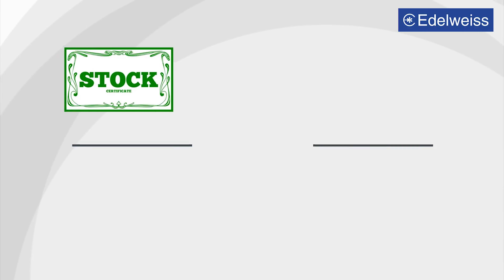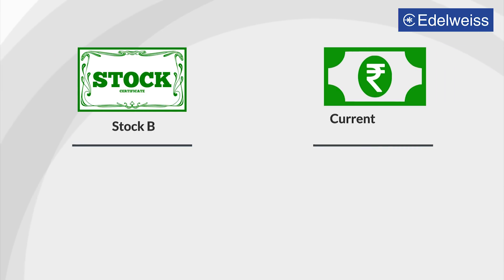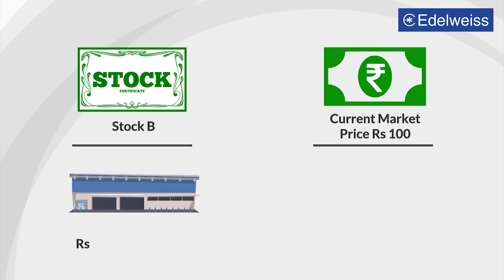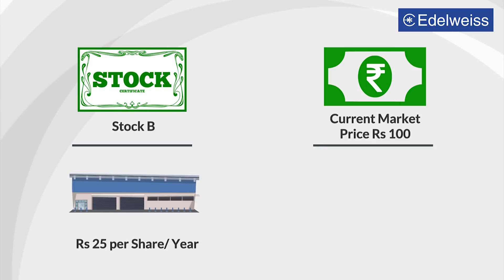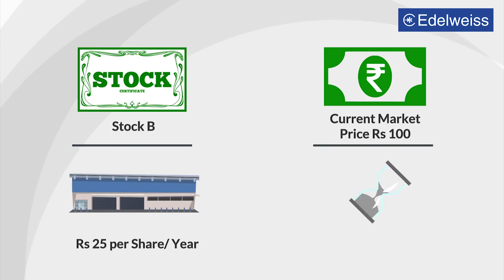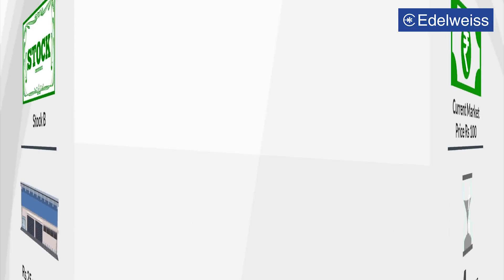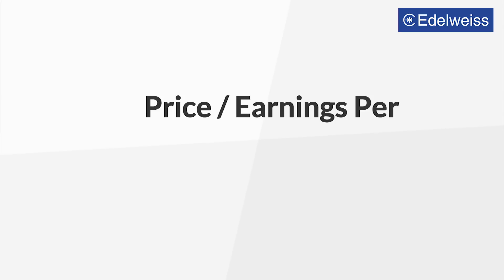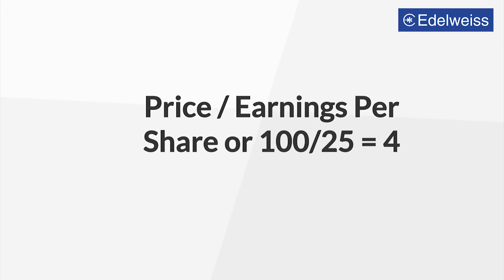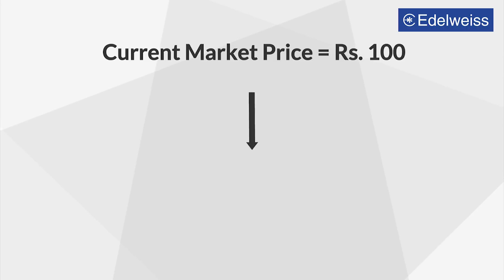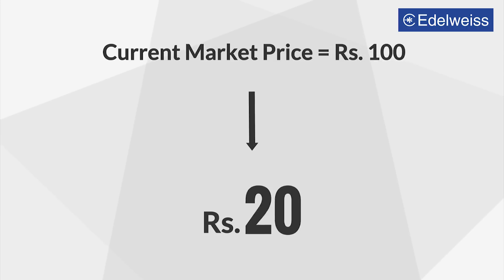Stock B is priced at the same rate, Rs.100, and the company earns Rs.25 per year per share. This means you will recover the same capital investment of Rs.100 in 4 years. The P-E for stock B is 100 upon 25, which equals 4. This means the market is rewarding a multiple of 4 for current earnings per share of Rs.25.